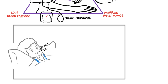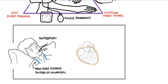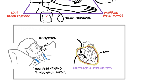Kussmaul's sign is an important clinical examination finding. It is present when, during inspiration, the person's neck veins bulge and distend rather than collapse. Kussmaul's sign is a typical feature of constrictive pericarditis but can also be seen in cardiac tamponade. Normally during inspiration there is increased filling of the right side of the heart due to a decrease in intrathoracic pressure, which normally collapses the neck veins. In constrictive pericarditis there is restricted filling, so you get distended neck veins instead.